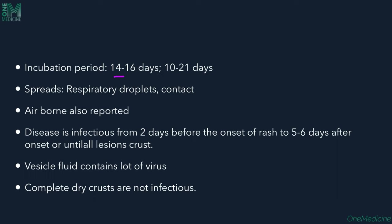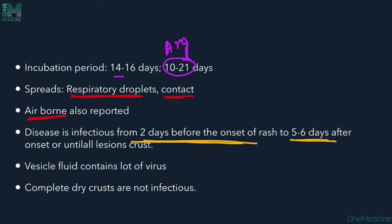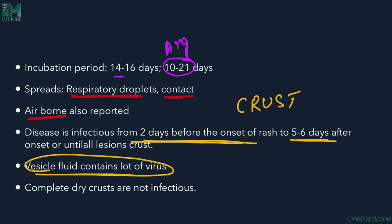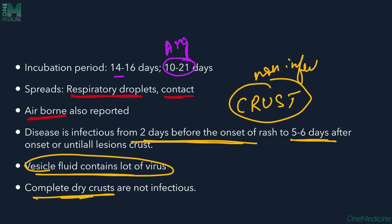The incubation period is 14 to 16 days, with a range of 10 to 21 days. Spread occurs by respiratory droplets, direct contact, and airborne routes. The disease is infectious 2 days before the onset of rash to 5–6 days after. Vesicle fluid contains large amounts of virus; the disease remains infectious until lesions crust. Complete dry crusts are non-infectious.